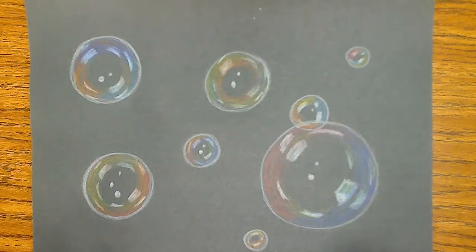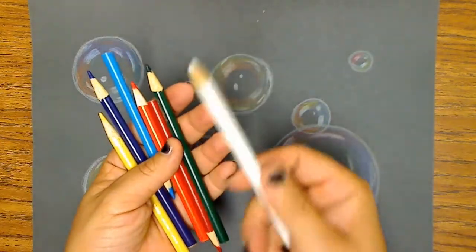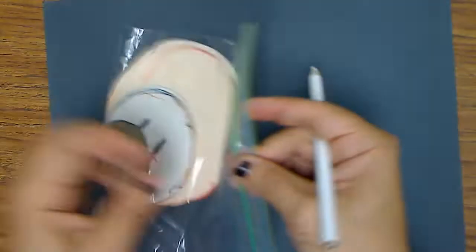For this beautiful picture of some bubbles you are going to need black paper, some colored pencils, and especially a white colored pencil. Now I'm going to cheat and use some patterns. I have some circle patterns here.